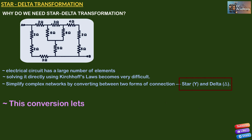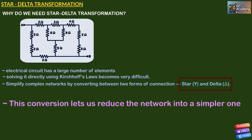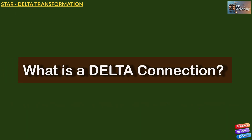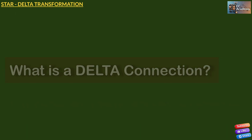This conversion lets us reduce the network into a simple one which can be easily solved using series and parallel rules. What is a delta connection?